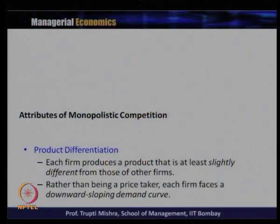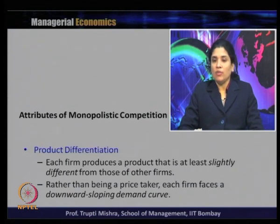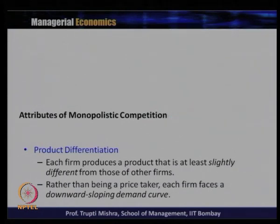One important feature of monopolistic competition is product differentiation. Each firm produces a product that is at least slightly different from those of other firms. Rather than being price takers, each firm faces a downward sloping demand curve. Product differentiation is discussed further in terms of the parameters on which products differ from each other.